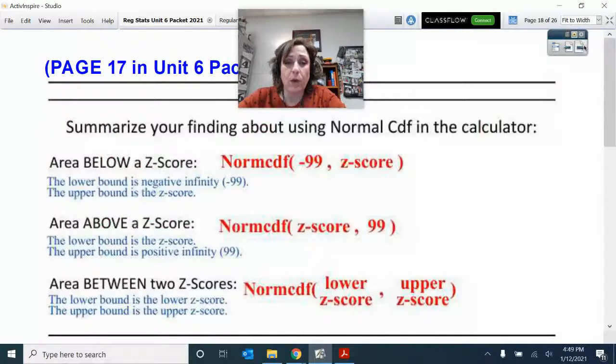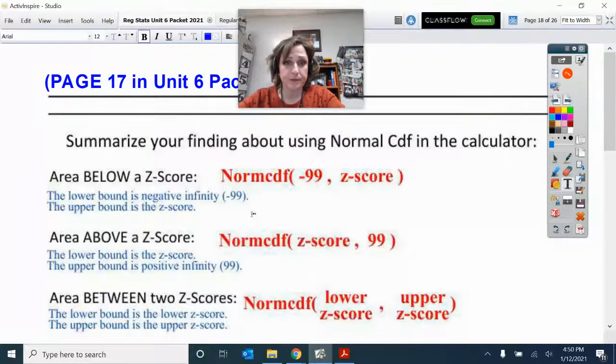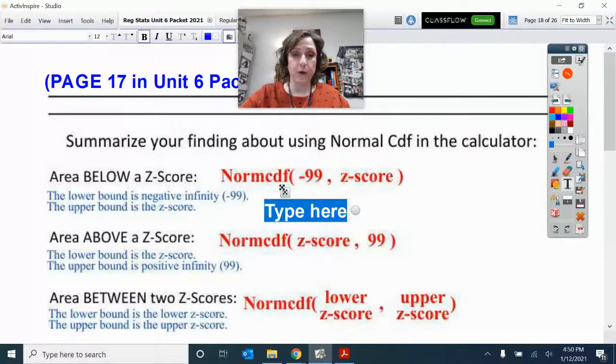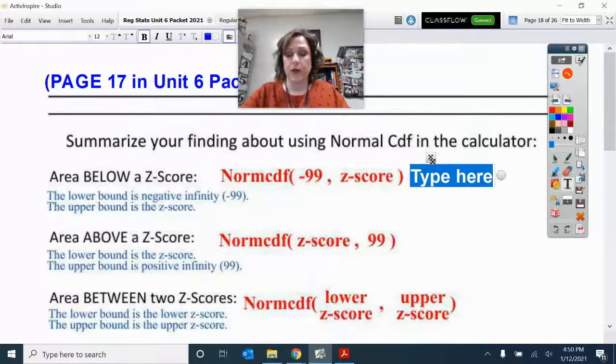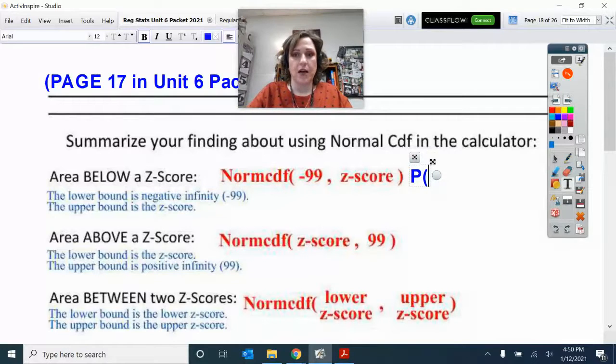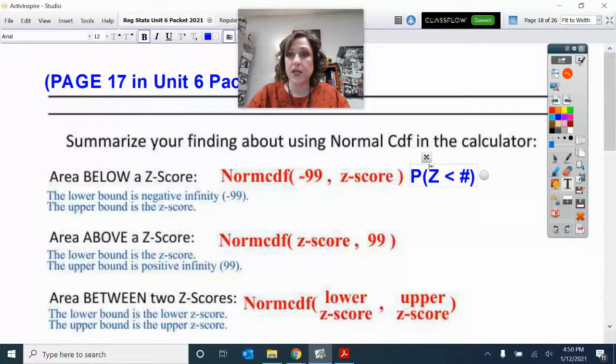Here's our summary. The area below a Z score goes from negative 99—that simulates negative infinity—up to the Z score. Let's put the probability notation in here. For one that goes below, we want the probability that our Z score is less than whatever that number is. That's how you do that probability notation, and then you put your answer as a percent.